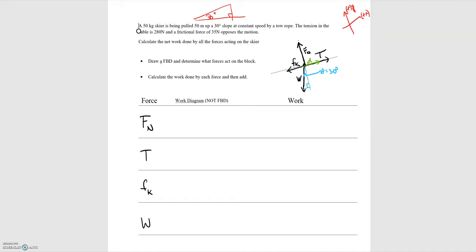Starting with the normal force: we have the normal force in the positive y direction and displacement in the positive x direction, so those two are perpendicular — theta equals 90 degrees. For the tension, the tension and displacement D are in the same direction, so theta equals 0 degrees.